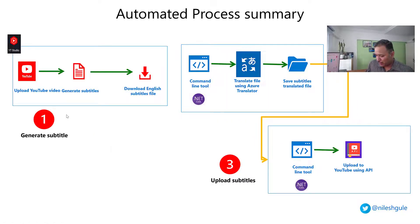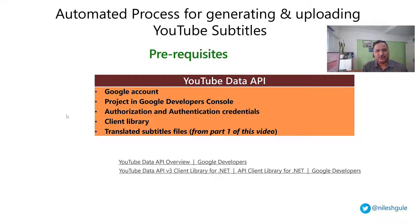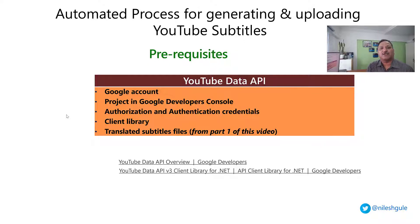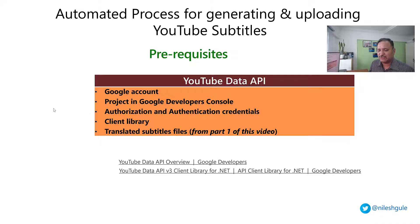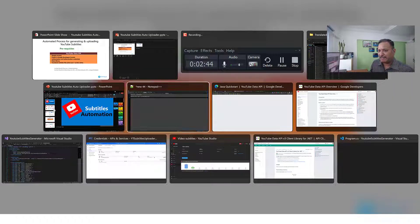We will be programmatically uploading the subtitles to YouTube, and to get started we need access to the YouTube Data API. This allows us programmatic access to various features of YouTube. To use the YouTube Data API we need a Google account. Once we have that, the next step is to create a project in the Google Developers Console, then add authentication and authorization features, obtain credentials to securely access the API, and get the client library.